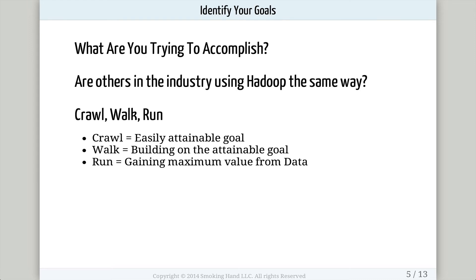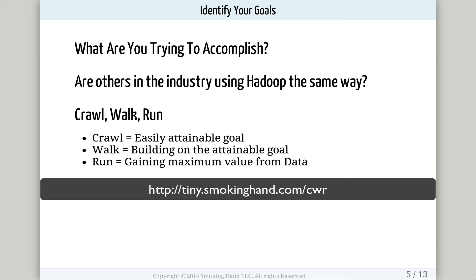The first important step is to identify your goals — what you really want to decide is what you are trying to accomplish. Without a clear objective of what you want to do with your big data solution, you won't be able to accomplish it. One shortcut you can take is to look at what others in the industry are using Hadoop for, and you may be able to use it in the same or a very similar way. As you're identifying your goals, you need to figure out how you're going to accomplish them. I recommend going with a crawl, walk, run approach.